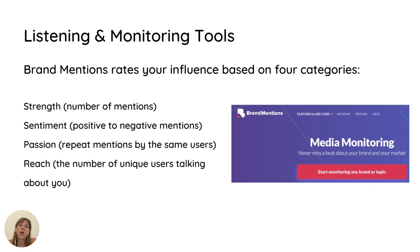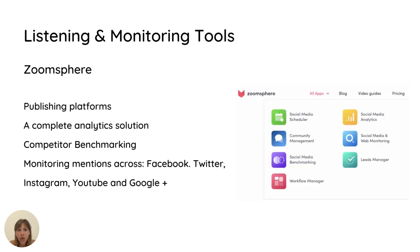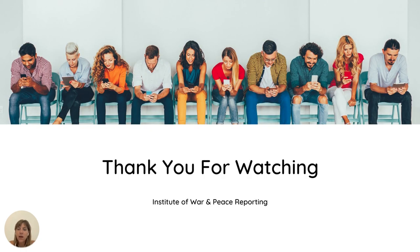Brand Mention allows you to rate your influence based on four categories: strength by the number of mentions you receive, sentiment whether positive or negative, passion by how many times the same user mentions you, and reach by the number of unique users talking about you. Finally, ZoomSphere is a publishing platform that also allows you to monitor your mentions across many social media platforms. Thank you for watching, I hope you enjoyed it. Good luck!